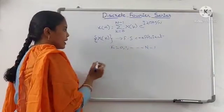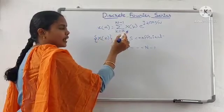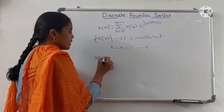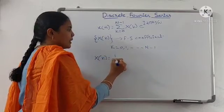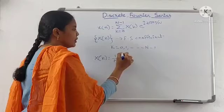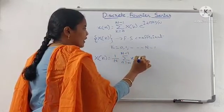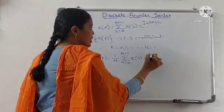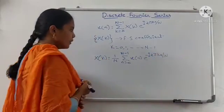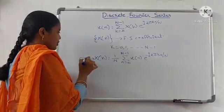In this equation, x of n can be derived from X of k. So X of k is equal to 1 by N, summation from n equals 0 to N minus 1 of x of n, e to the power minus j 2 pi k n by N. This is the Fourier series coefficient.